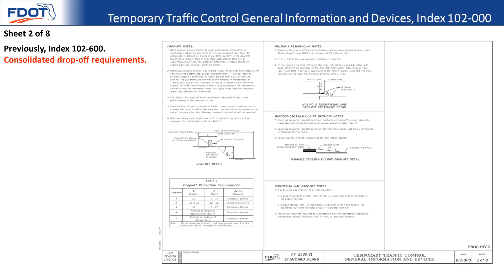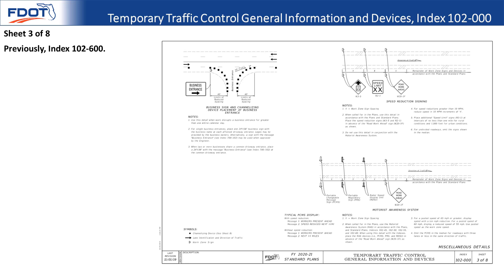Sheet two of eight: the drop-off requirements have been consolidated into a single sheet. For the most part these requirements are the same as previous. There was a small change regarding table one — the minimum offset is now two feet instead of zero.